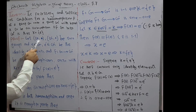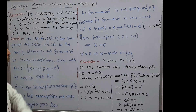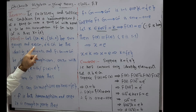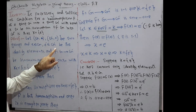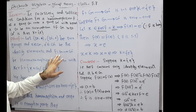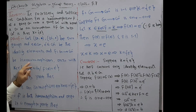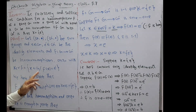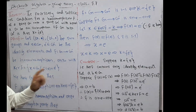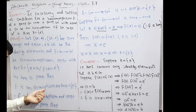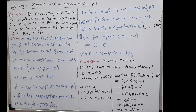Proof. Let G with respect to multiplication be a group and G' with respect to multiplication also be a group. Let E belong to G and E' belong to G' be the identity elements. Let the mapping F: G → G' be a homomorphism onto, with kernel F = {x ∈ G : F(x) = E'}. We have to prove that F is an isomorphism if and only if kernel F = E.